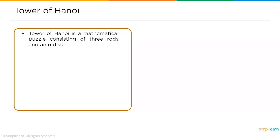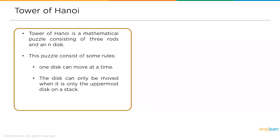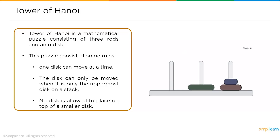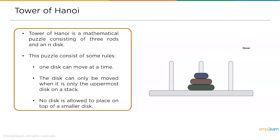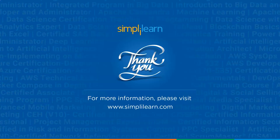The last application is the Tower of Hanoi — a mathematical puzzle with three rods and n disks. The rules are: only one disk can move at a time, a disk can only be moved when it is at the uppermost position on the stack, and no disk may be placed on top of a smaller disk.